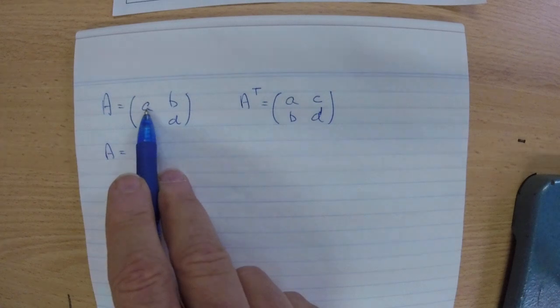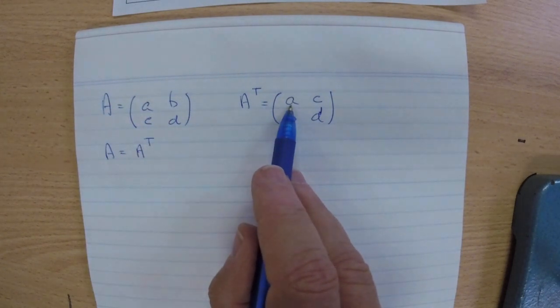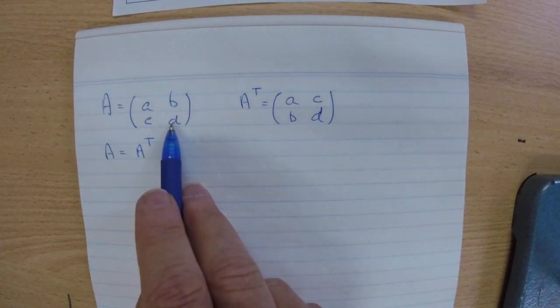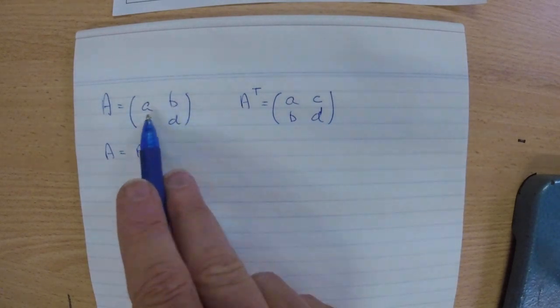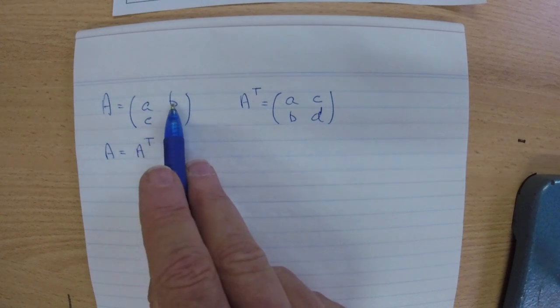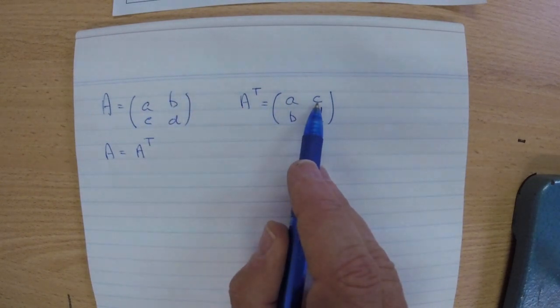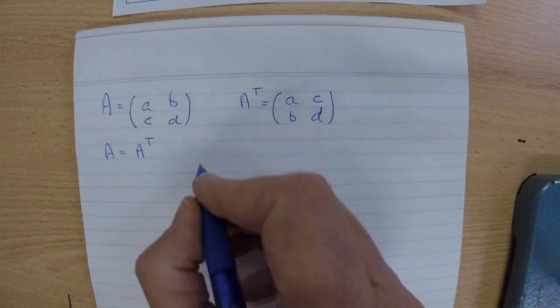Well, any value A would still appear in the first row, first column. Any value D would still appear in row 2, column 2. It's these ones here. So value of B would have to equal C, and value C would have to equal B.